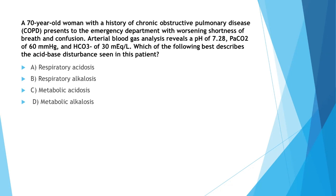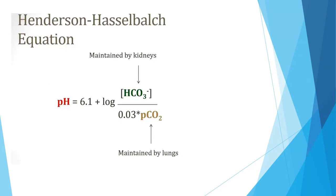We will return to this question, but let's first discuss some theory on acid-base balance. The first is the Henderson-Hasselbalch equation — this is the most important equation you need to understand acid-base problems. The pH equals 6.1 plus log of bicarbonate divided by 0.03 times pCO2.